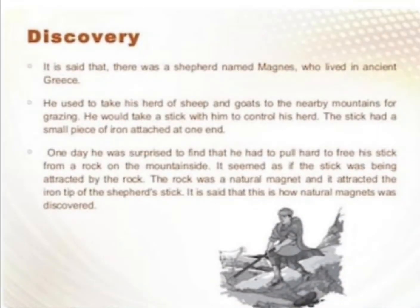Discovery — इसकी discovery कैसे हुई? It is said that there was a shepherd named Magnus who lived in ancient Greece. He used to take his herd of sheep and goats to the nearby mountains for grazing. He would take a stick with him to control his herd. The stick had a small piece of iron attached at one end.